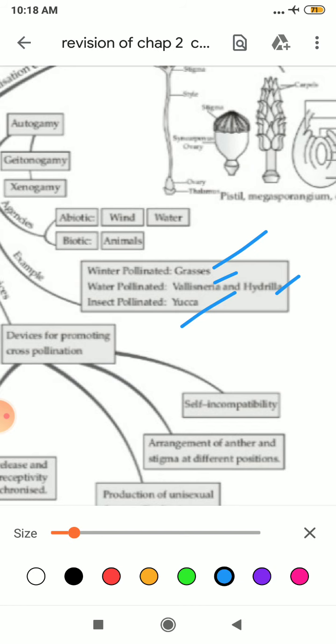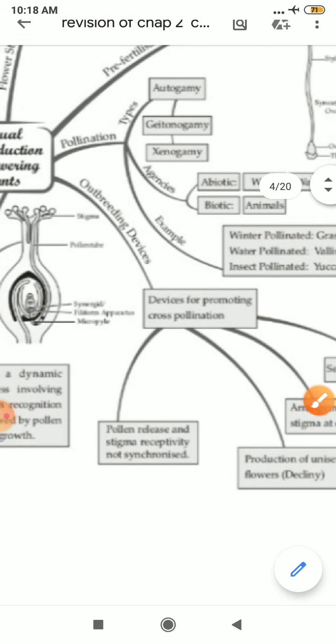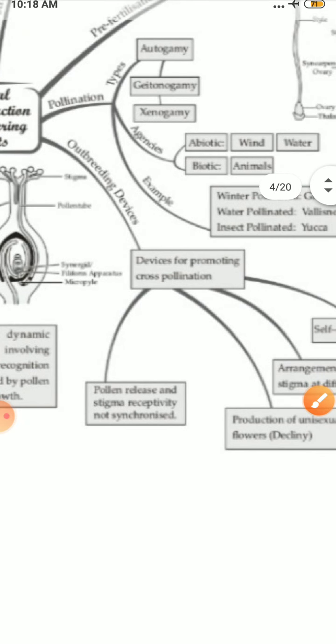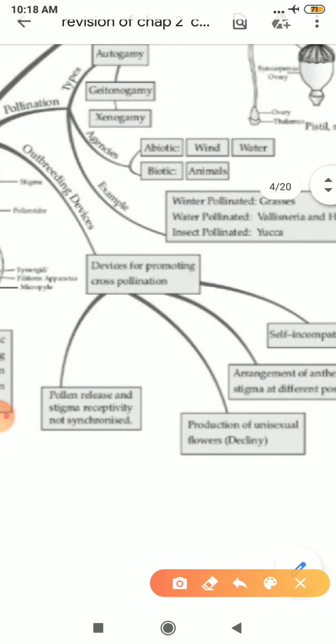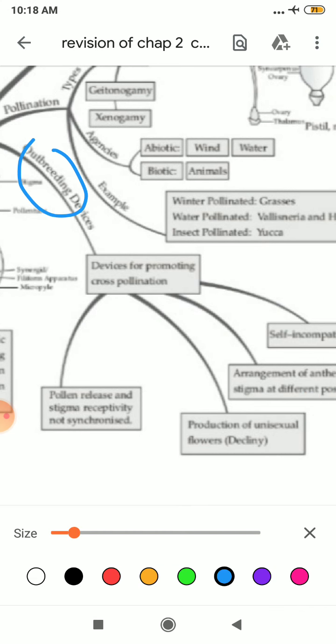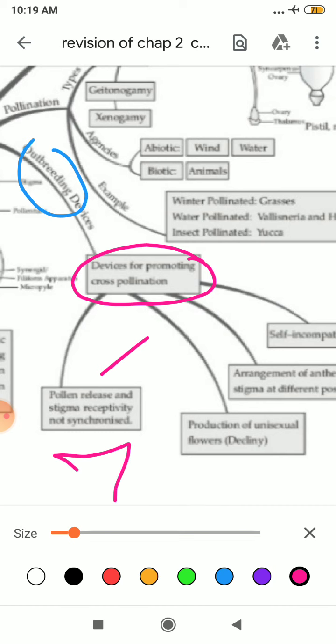After that, we have studied about outbreeding devices. These are devices for promoting cross-pollination. Cross-pollination is the transfer of pollen grain from the anther to the stigma of two different flowers. First, pollen release and stigma receptivity are not synchronized, so the stigma will not receive the pollen grain at the same time.